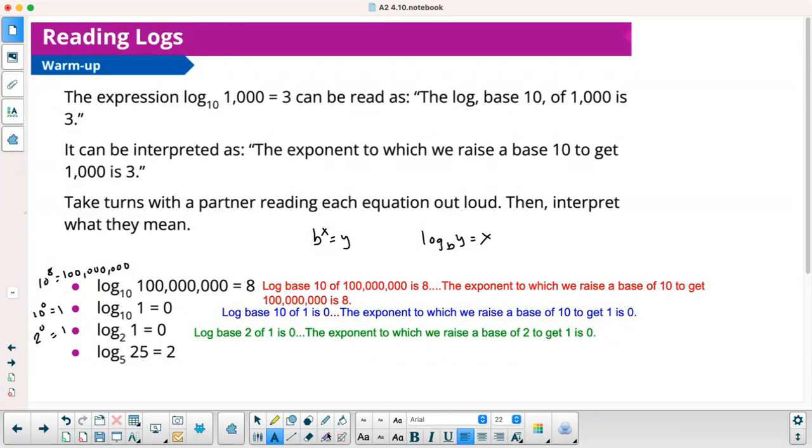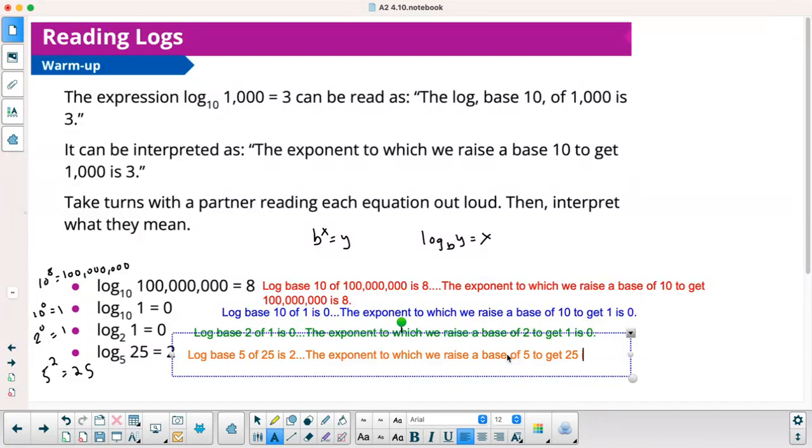And then the last one would be 5 to the 2nd equals 25. That's exponential form. Log base 5 of 25 is 2. I'd interpret it as the exponent to which we raise a base of 5 to get 25 is 2.